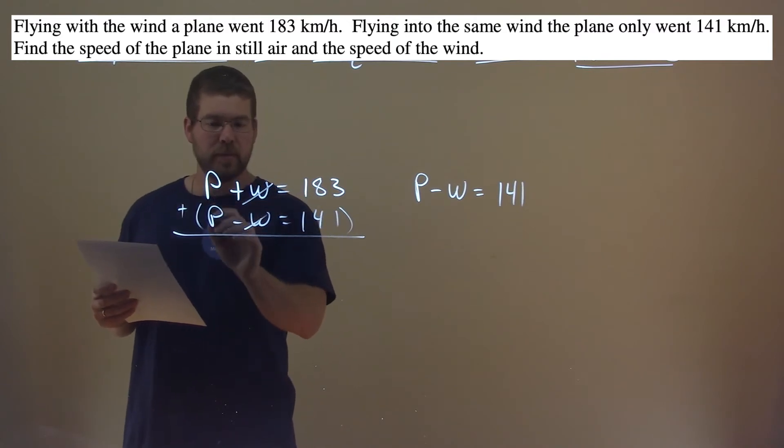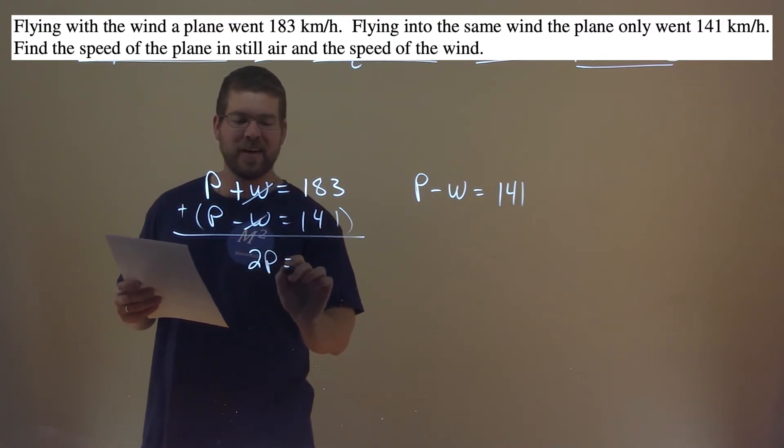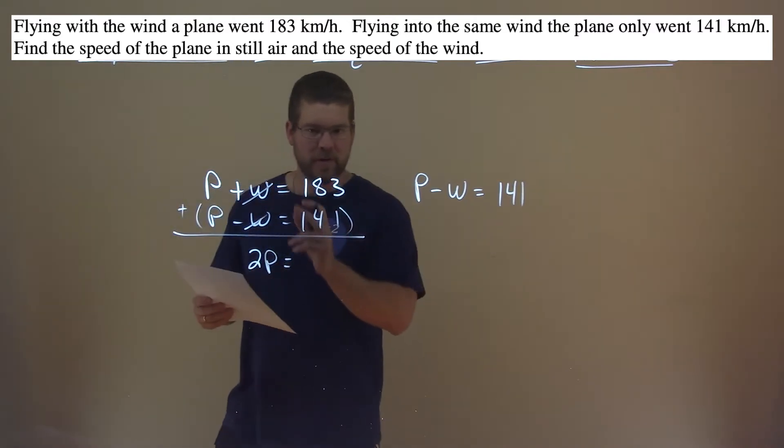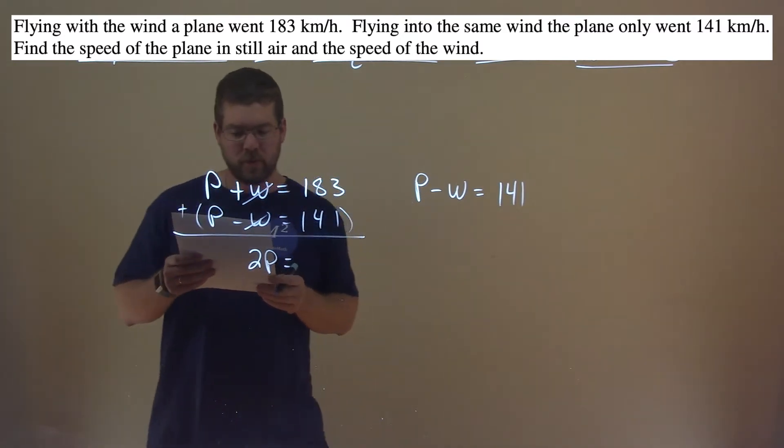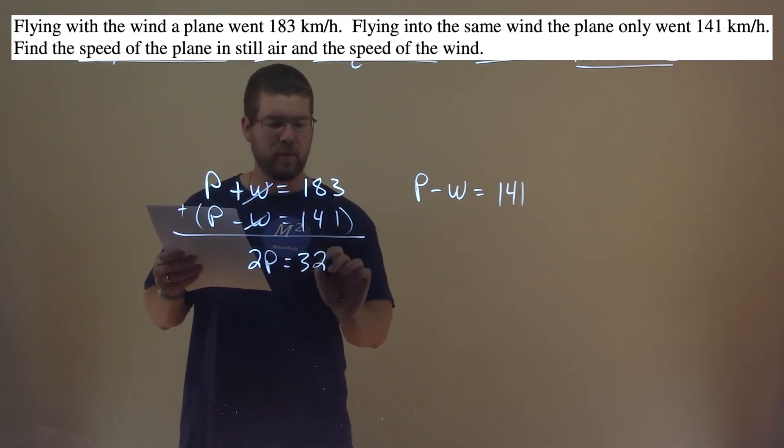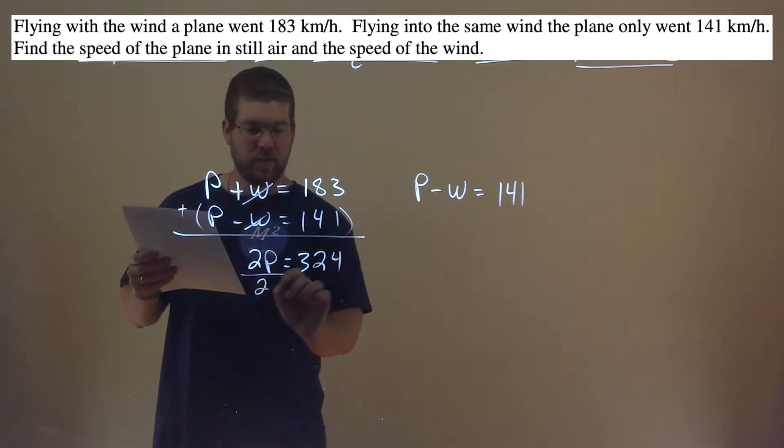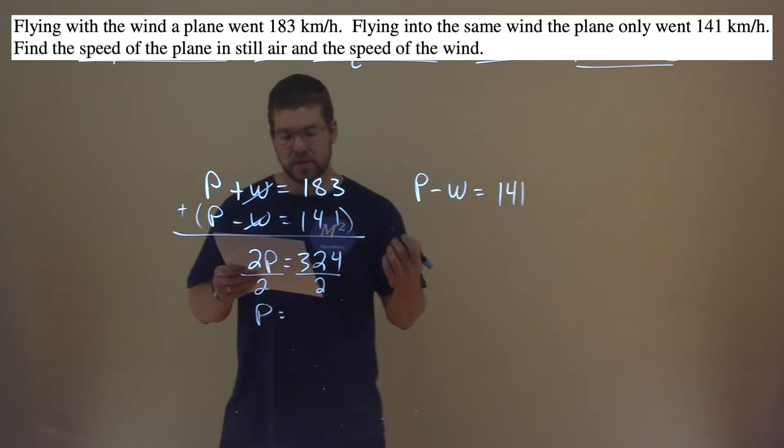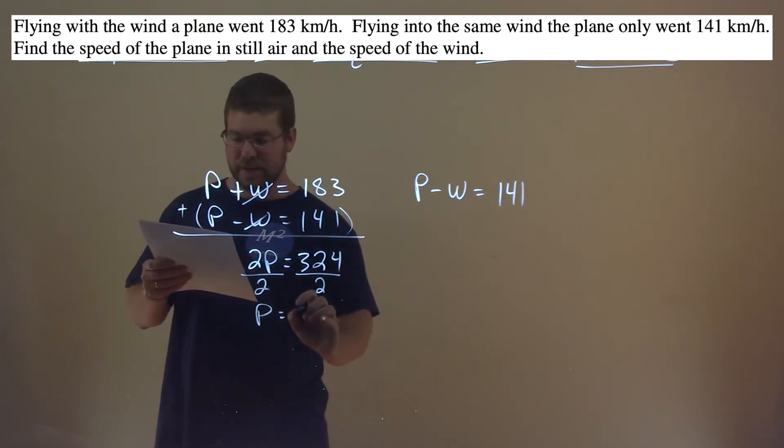And we're left as well, P plus P is 2P. Don't forget that. I bet you a lot of people will. But don't forget that part. And 183 plus 141 is 324. Divide both sides by 2, and P equals 324 divided by 2, which is 162.